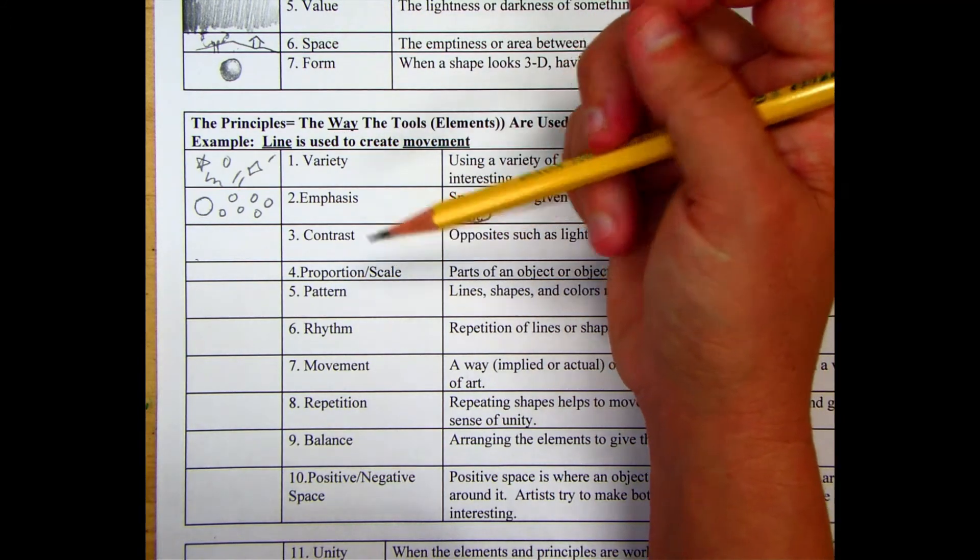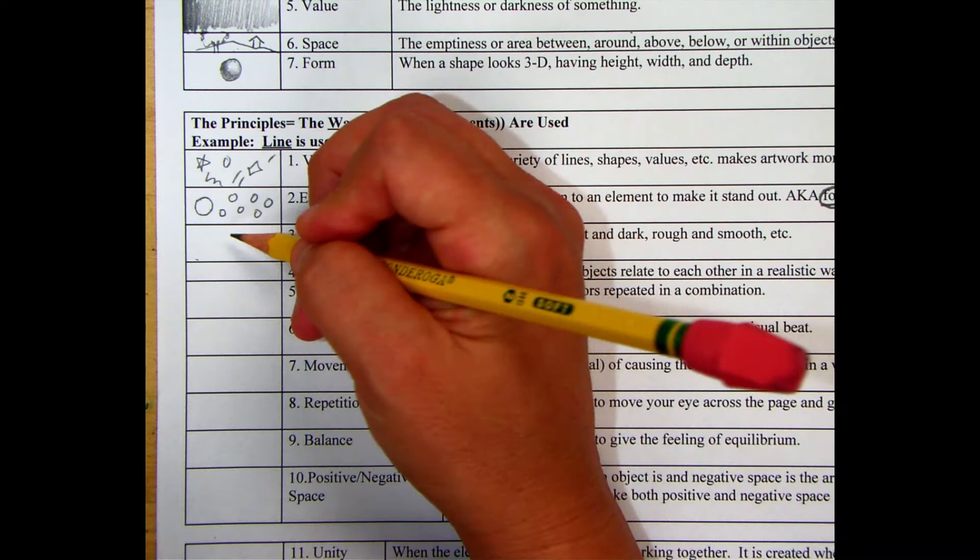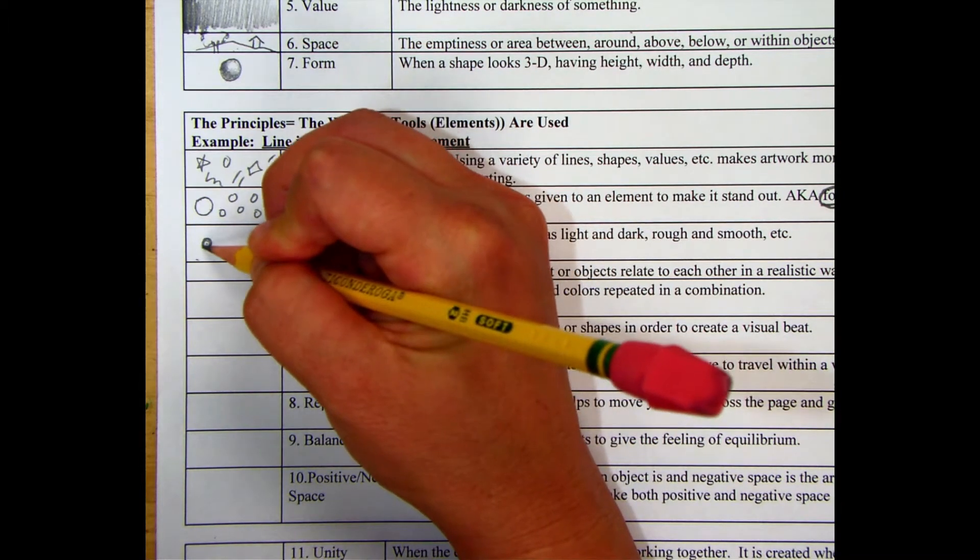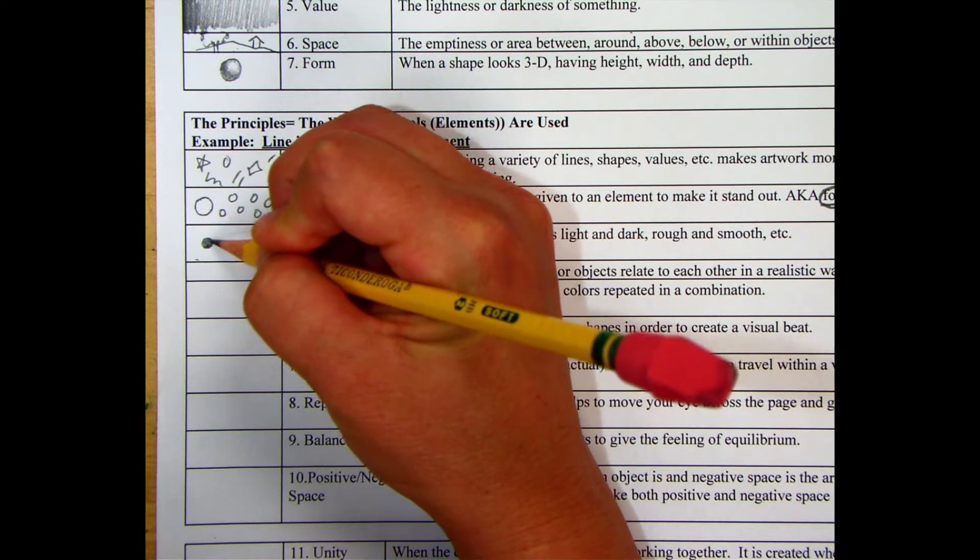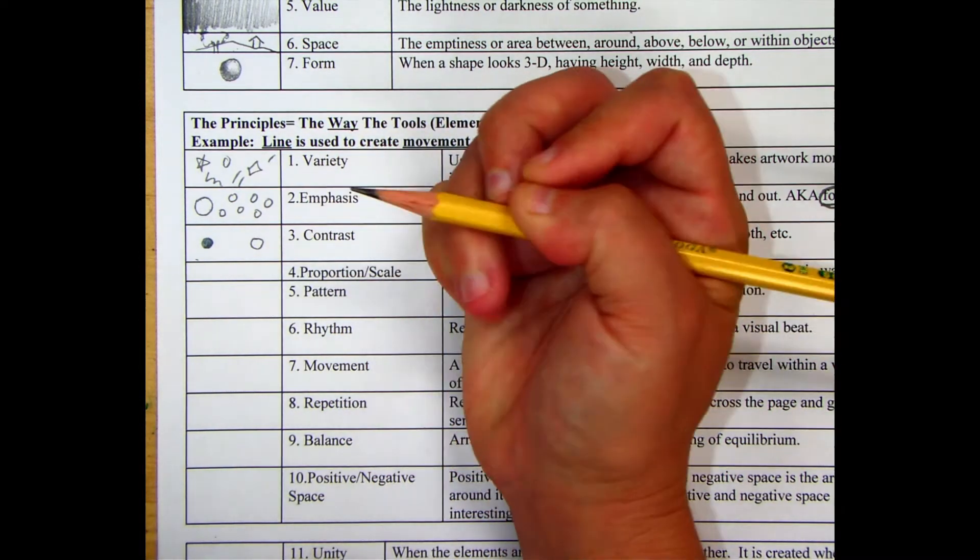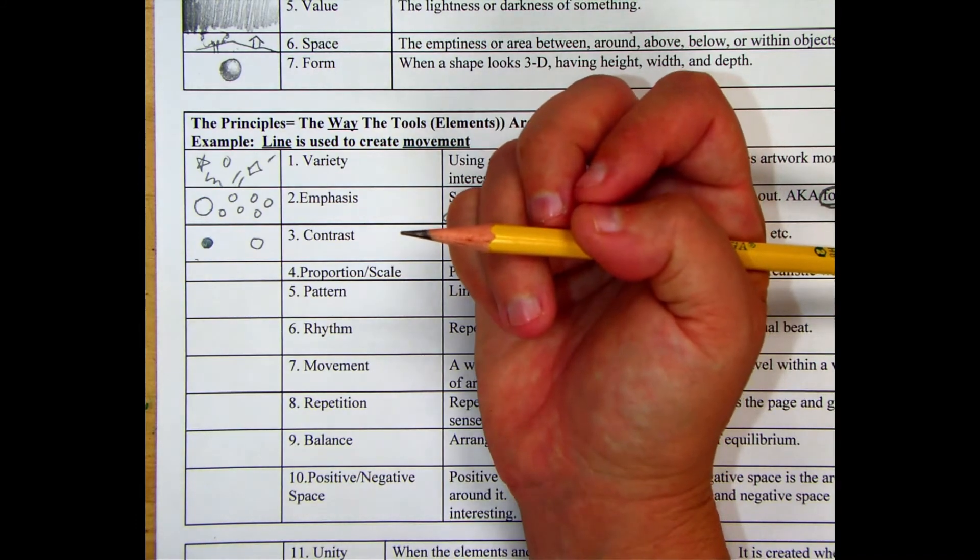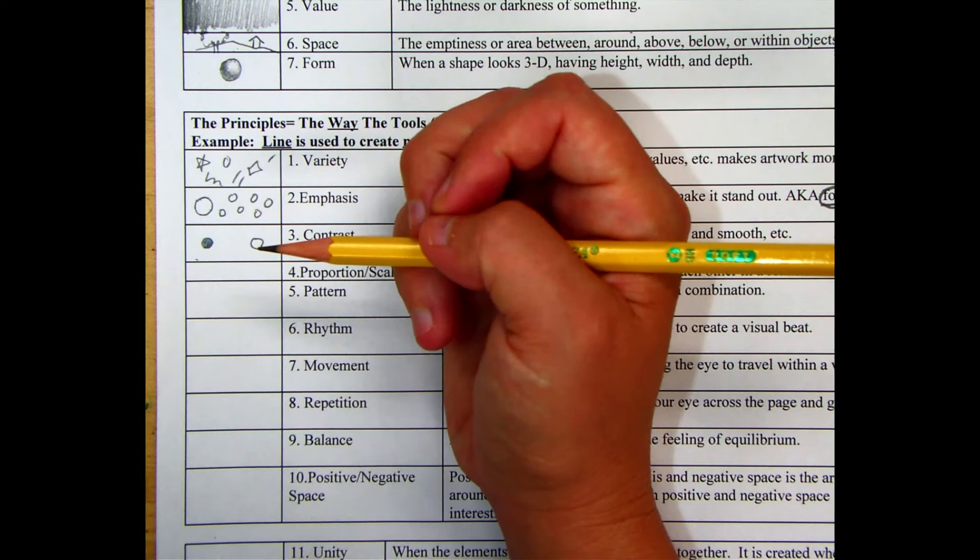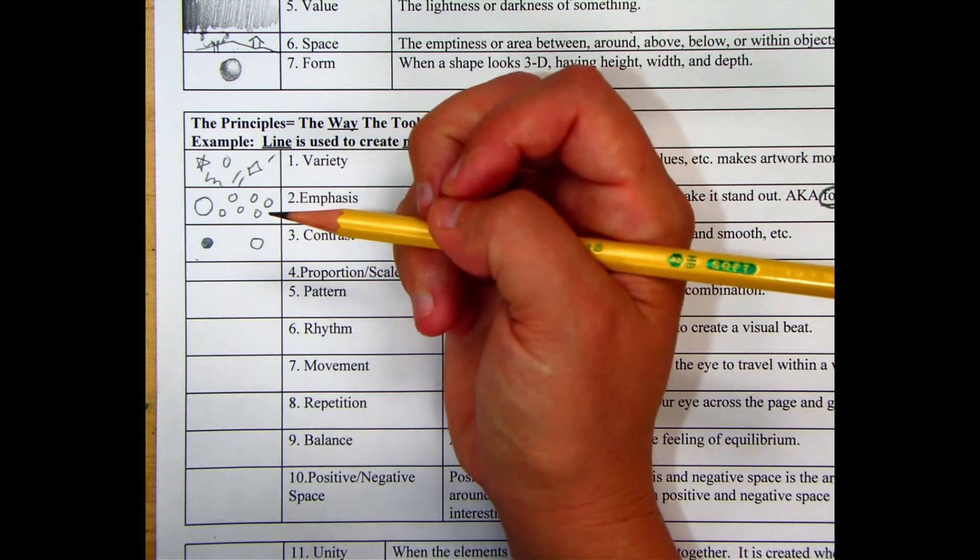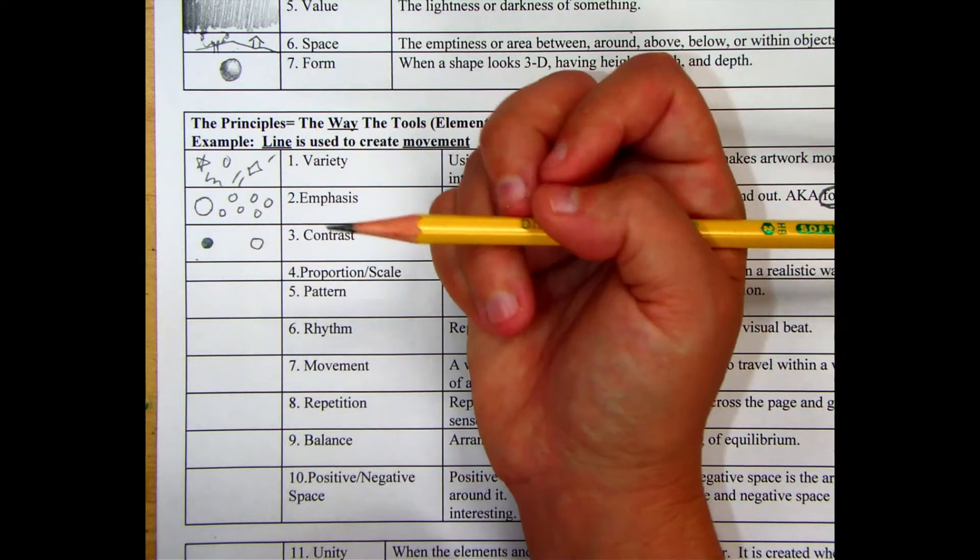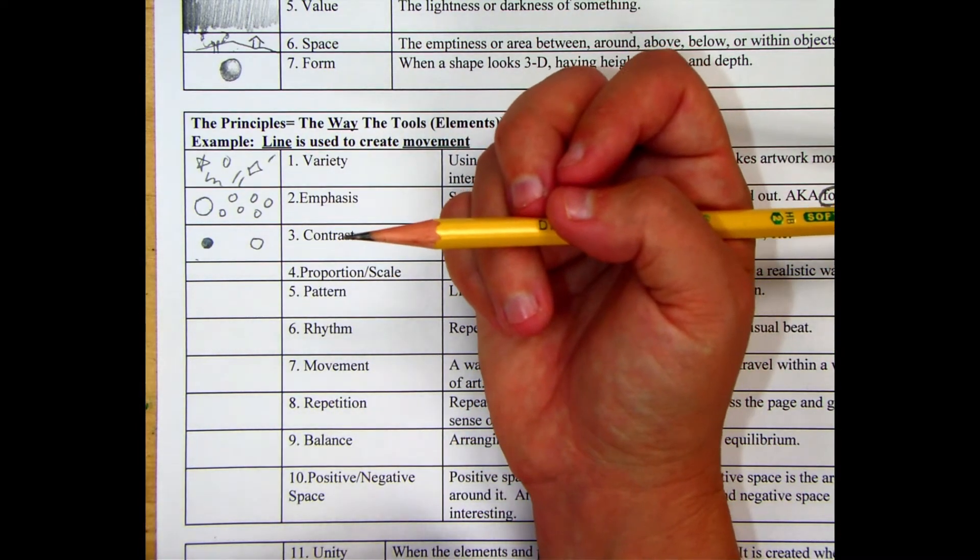The next one is contrast. So contrast is the difference between light and dark. If you have a lot of contrast, then you have something that gets really light and something that gets really dark on your canvas versus if this was super light and that was light too, then you don't have a lot of contrast. Having a good range of values that goes from pure white to black makes your artwork look more three-dimensional.